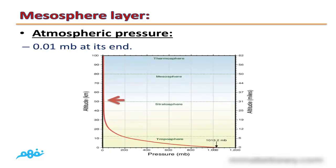Atmospheric pressure: Its atmospheric pressure decreases by increasing the height gradually until it reaches only 0.01 millibar at its end at mesopause.